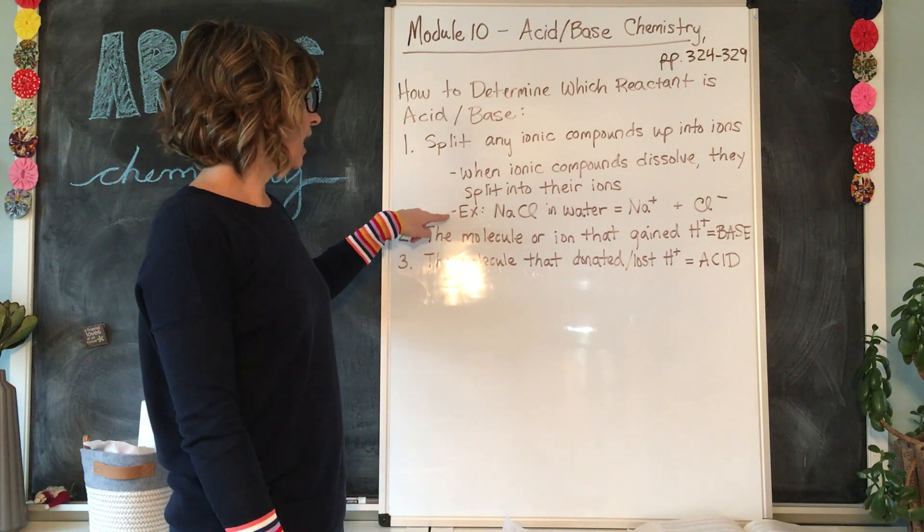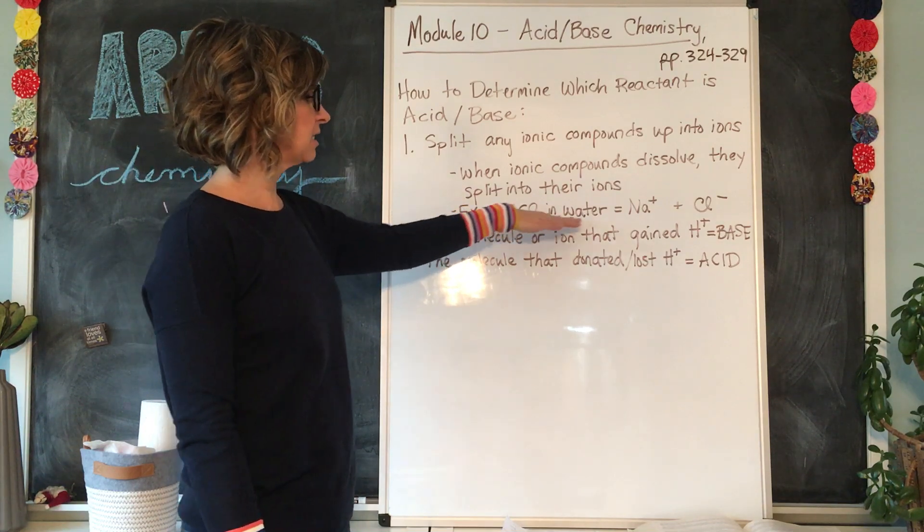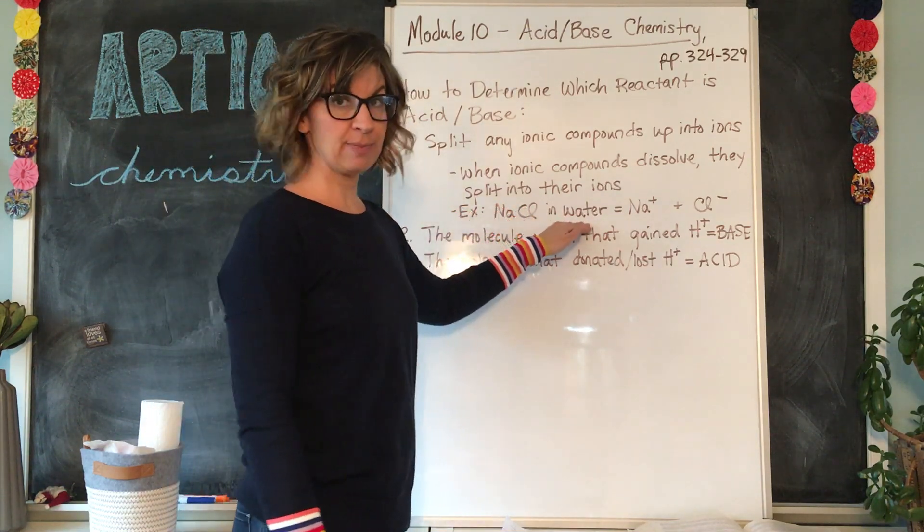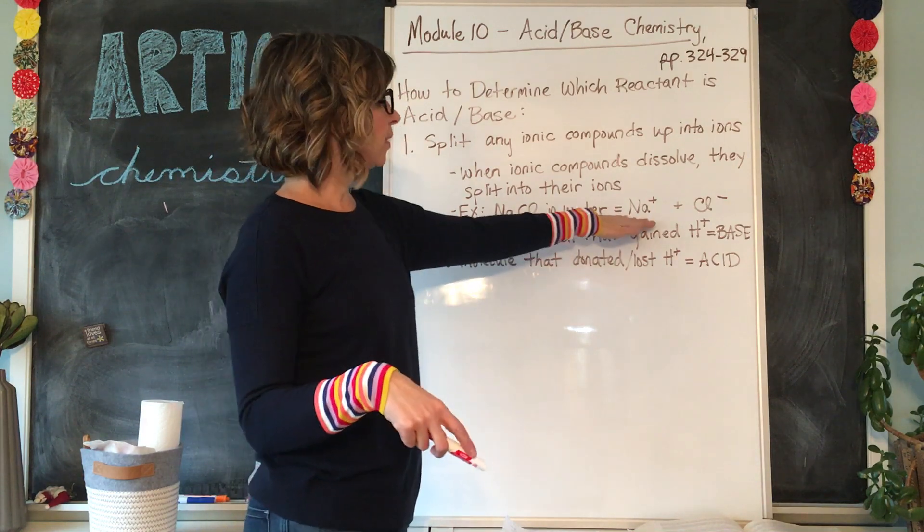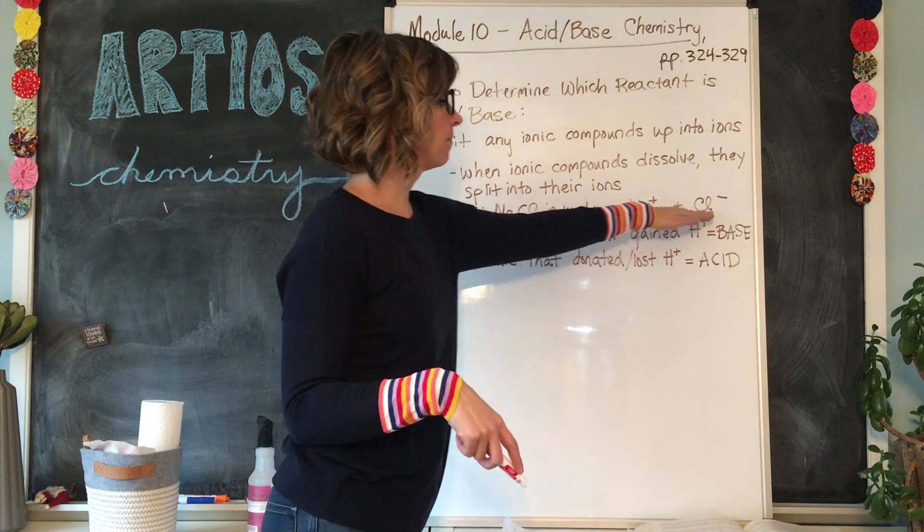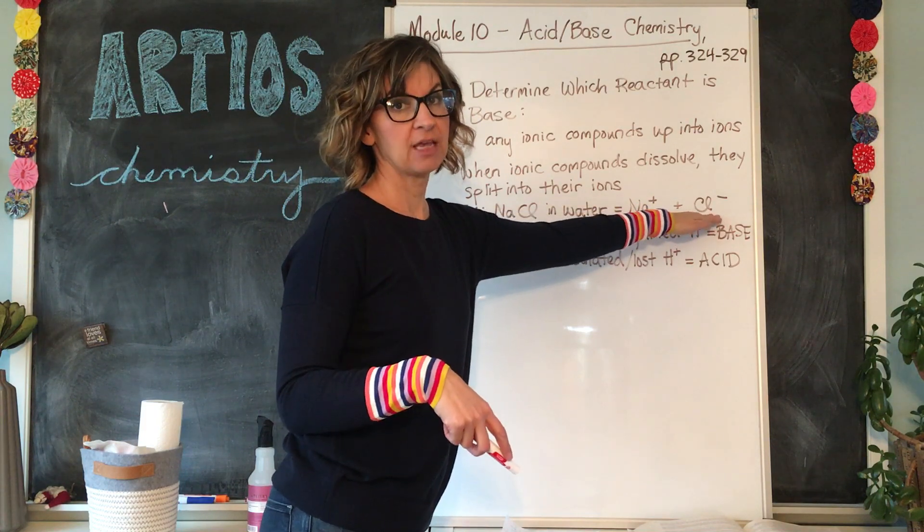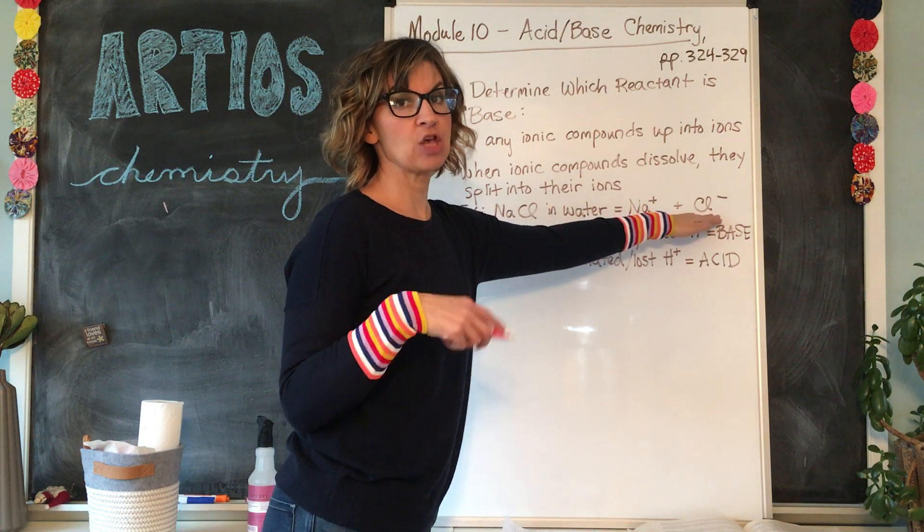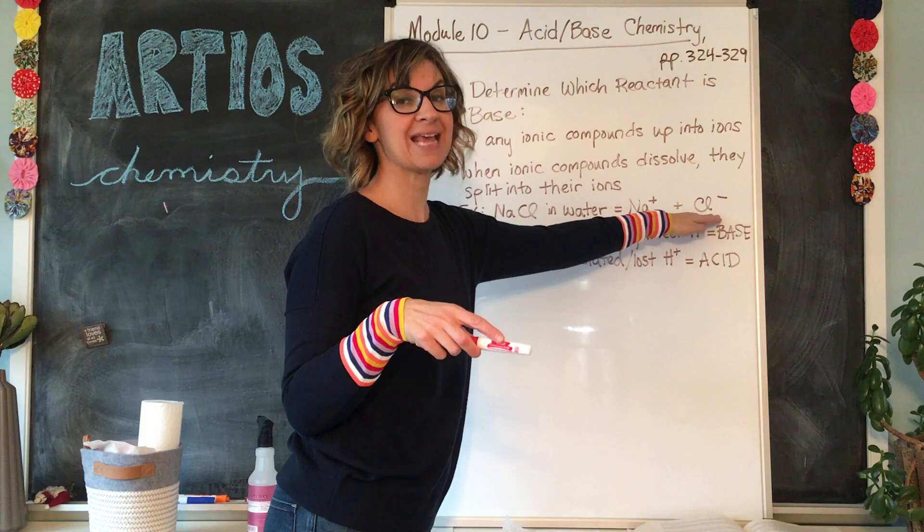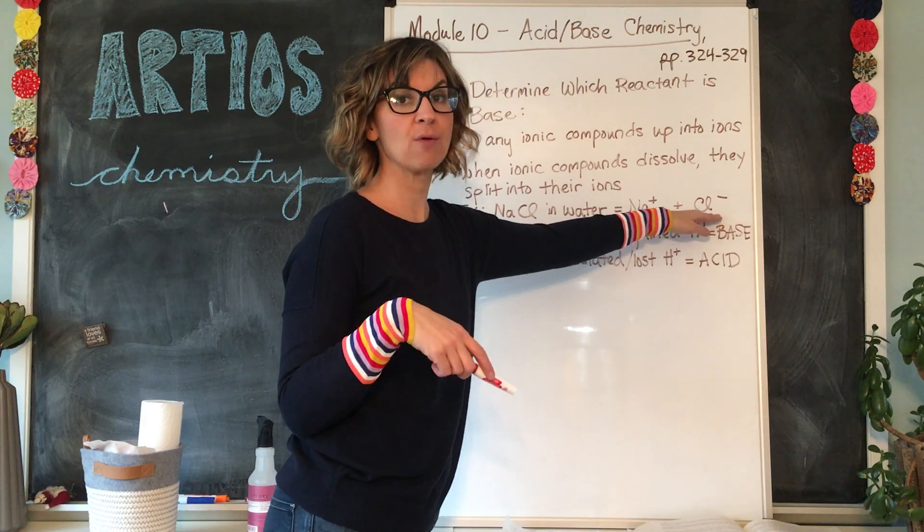For example, NaCl, table salt, in water will actually be present not as the NaCl molecule, but as Na+ and Cl-. So splitting up those ions is going to help you determine what's the acid, what's the base, and you will see why when we do some examples.